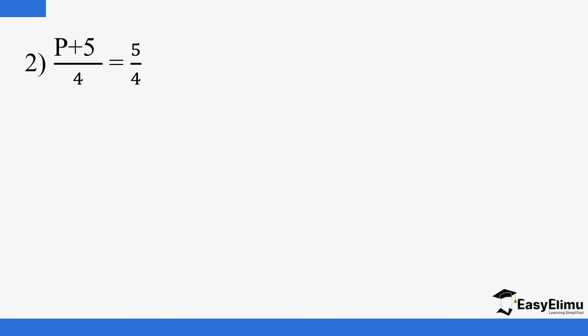Here is another example. You can decide to multiply all through by 4, or you can simply cross multiply. We talked about this when dealing with ratios — you can check out our videos on that. Cross multiplying: when you have one term each on both sides of the equation, you can multiply diagonally — this diagonal equals the other diagonal.